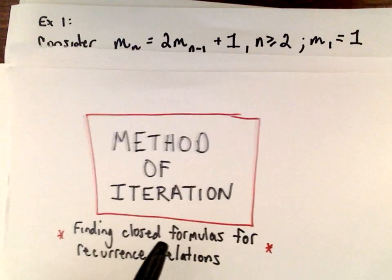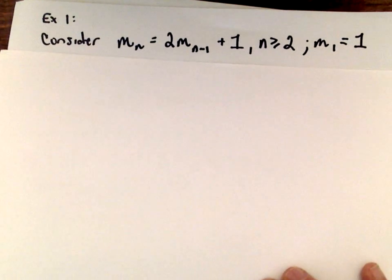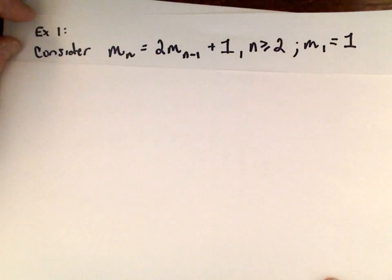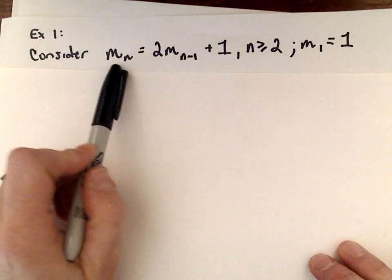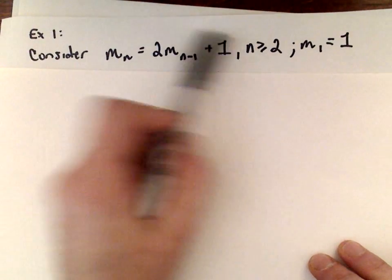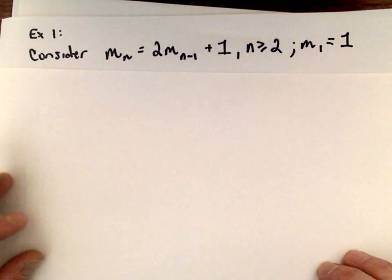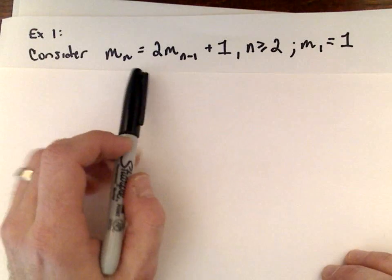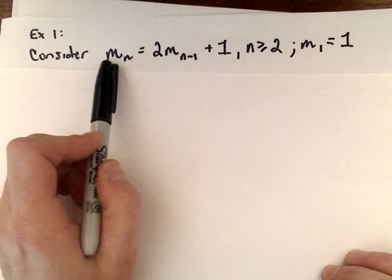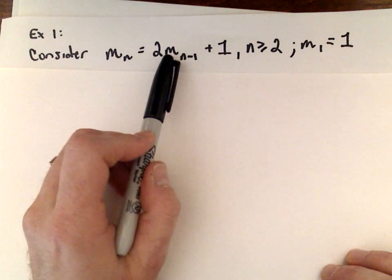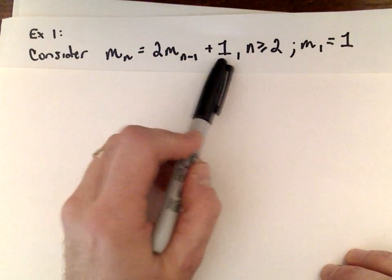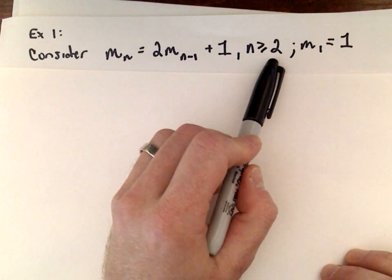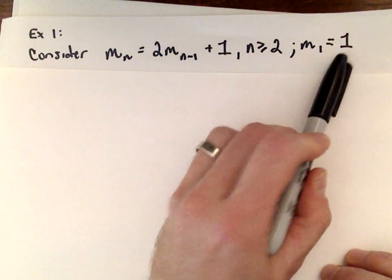A recurrence relation is when you have a formula and to find new values you have to use information about previous values. Probably the most common one is the Fibonacci sequence. In this case, we're going to use the recurrence relation m sub n equals 2 multiplied by m sub n minus 1 plus 1, where n is greater than or equal to 2 and m sub 1 equals 1.